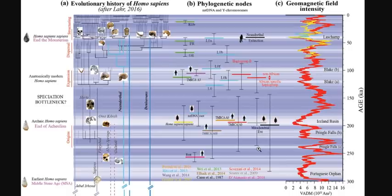Not only do we have mass extinction due to field intensity shifts, but we also have speciation — the beginning of new species. So magnetic field excursions cause extinctions and speciation at the same time. This is probably due to huge influxes of cosmic rays onto our planet — the only thing we know that can mutate the genome.